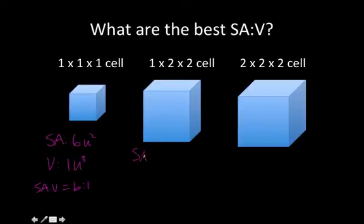Next, for this cell we find a surface area of 16 units squared, and we find a volume of 4 units cubed. So then we get a surface area to volume ratio of 16 to 4, which can be simplified to 4 to 1. So it's not as high as we have it here for this cell, but it's still relatively high.